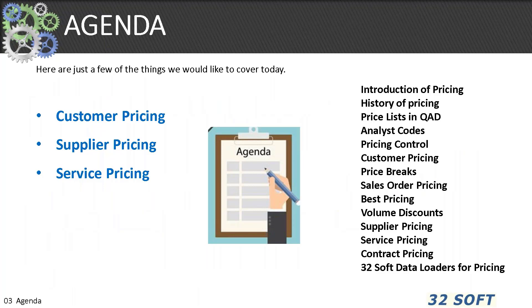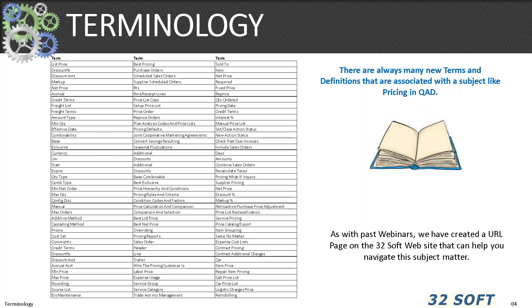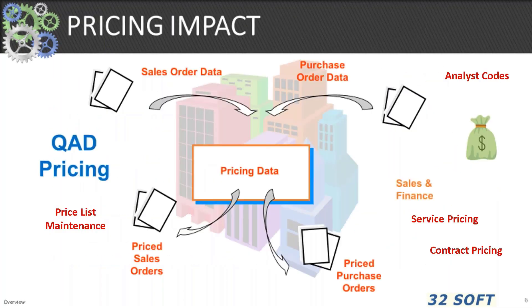Here are just a couple of things we'd like to cover today. I break it down into three basic areas: customer pricing, supplier pricing, and service pricing. Many new terms and definitions are associated with a subject like pricing. If you don't know the meaning of a phrase, please use Google, or now ChatGPT, or go to the knowledge base on the QAD website, or send us an email at 32Soft. We've created a URL page on the 32Soft website that will help you navigate this subject of pricing.